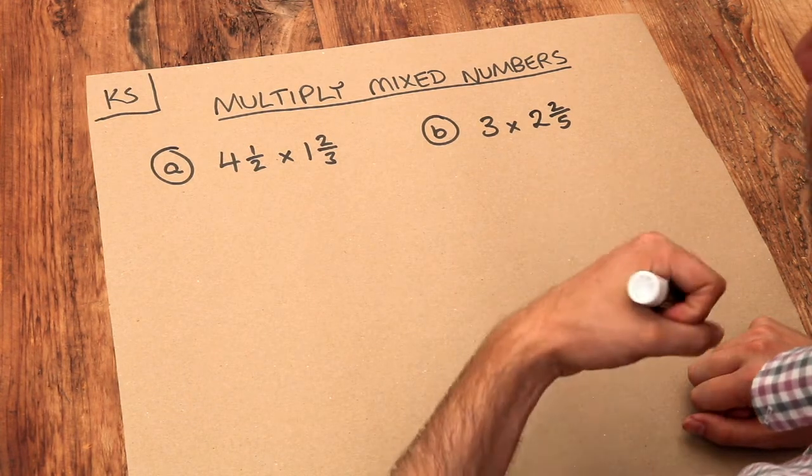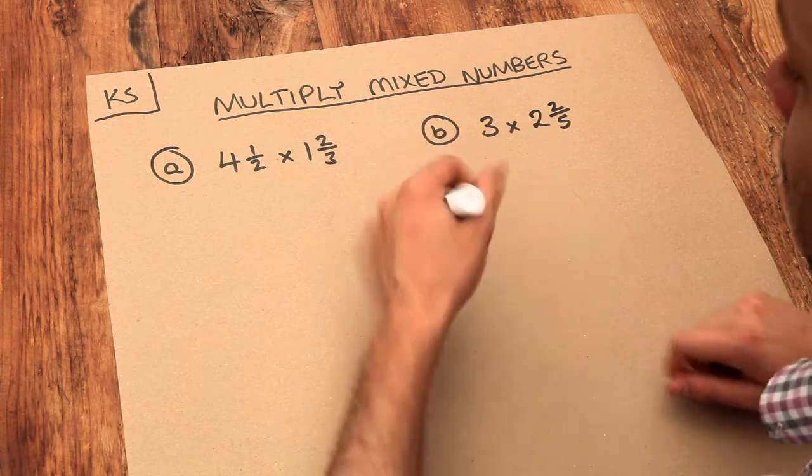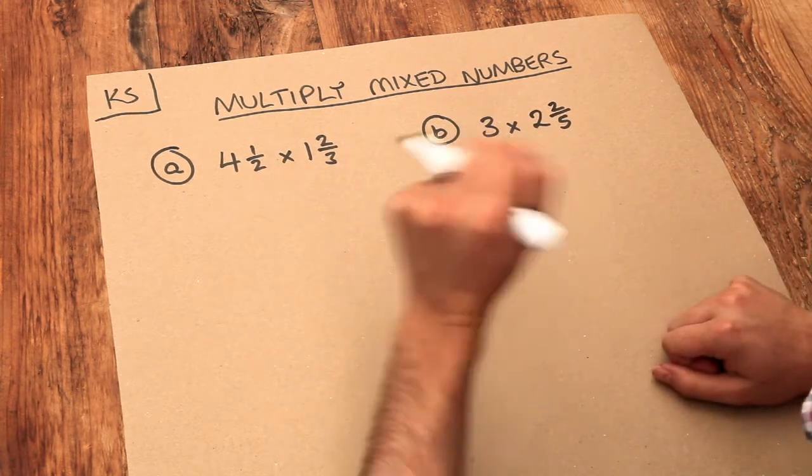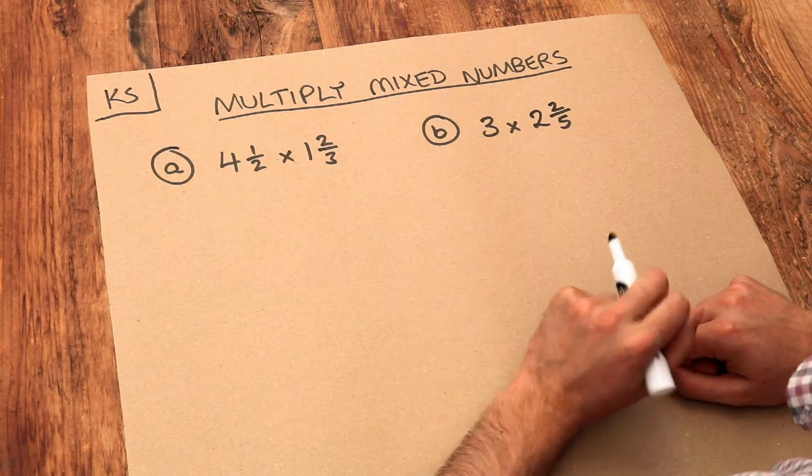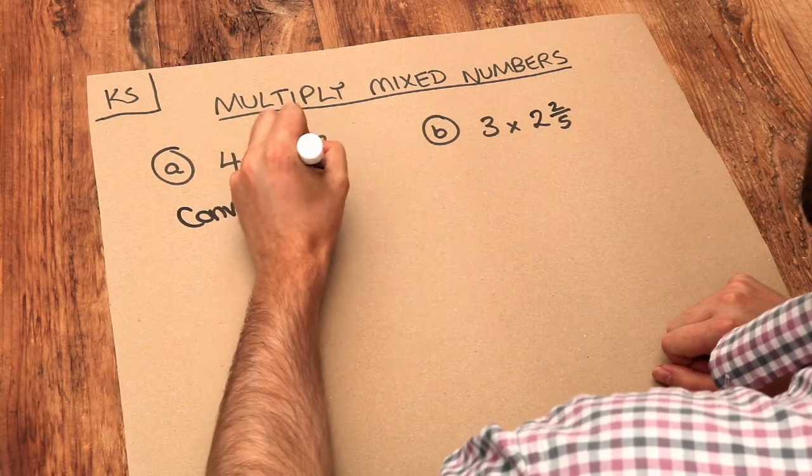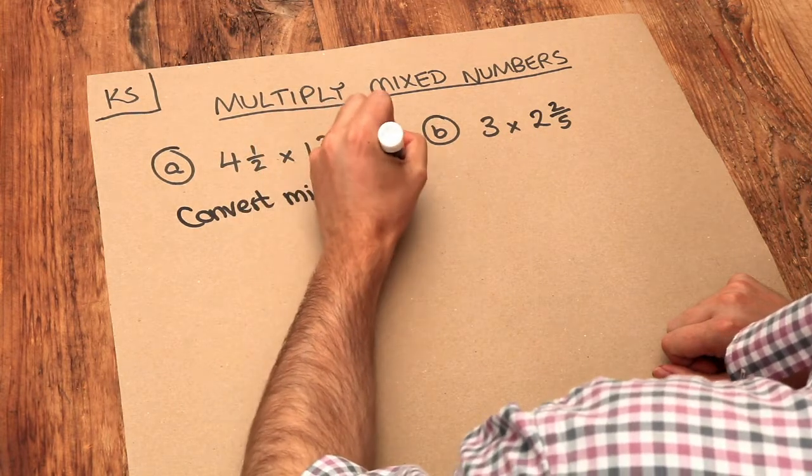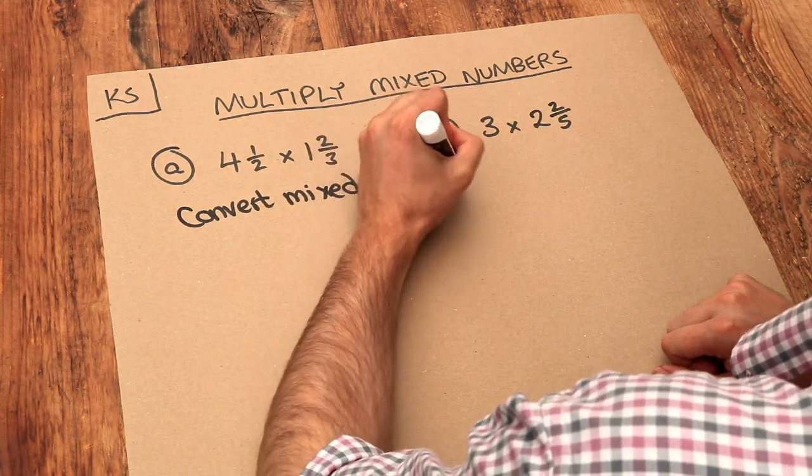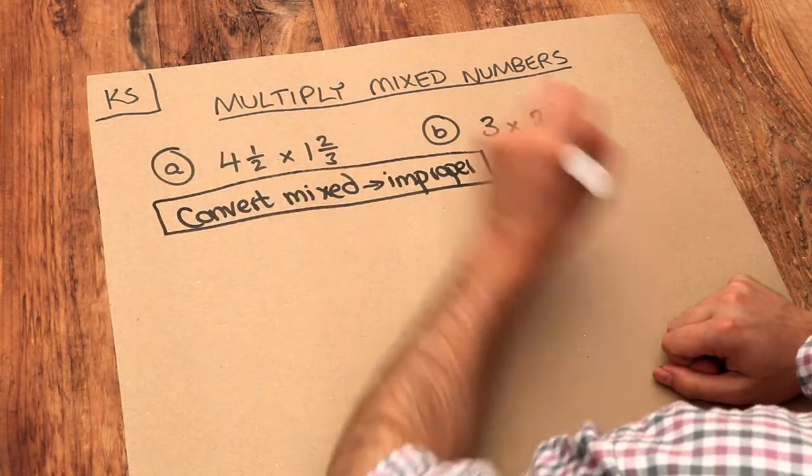We previously explored how we can multiply two normal fractions together, and there's only one extra step when we have mixed numbers. You just convert the mixed numbers into improper fractions first, and then we can do what we did before.